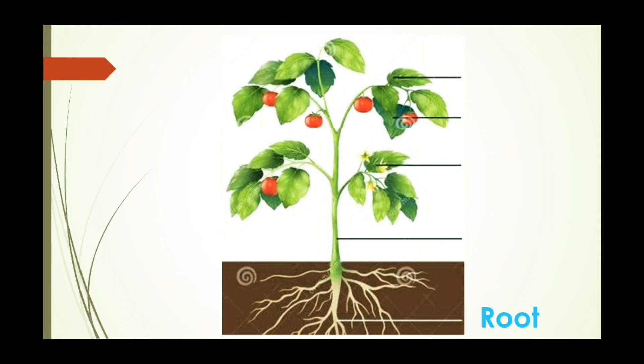Root, stem. See the spelling? R-O-O-T. Root. Stem, S-T-E-M. Stem. Flower, F-L-O-W-E-R. Flower. Fruit, F-R-U-I-T. Fruit. And last one is leaf, L-E-A-F. Leaf. Very good.